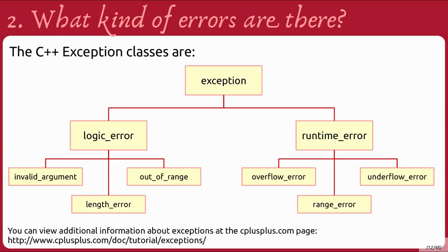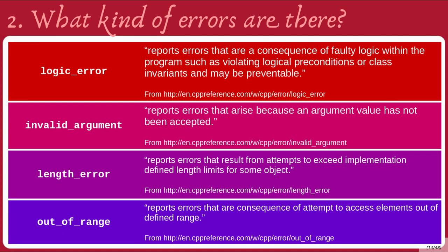Some of the built-in C++ exceptions are the base exception class, a logic error and a runtime error exception class, and some more specific exceptions like invalid argument, out of range, overflow error, and so on. Here are some descriptions of the exception types.